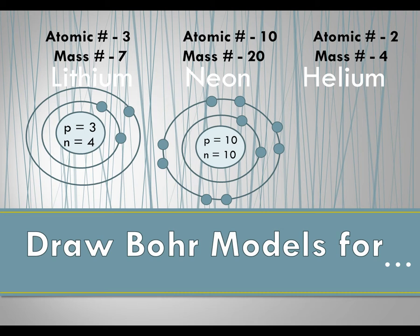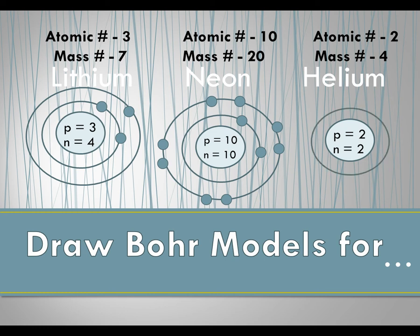Now we're going to do helium. Helium's atomic number is two and mass number is four. Our protons is two, and our neutrons is mass minus atomic number, so four minus two is two. There's our nucleus. It's very important that we're not putting electrons on our nucleus. We have two total electrons — I know that because my protons is two — so on that first energy level I can fit all of my electrons. Now I have done three examples for you, so I'm going to let you try a couple.